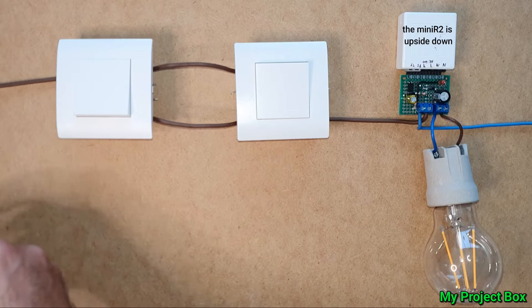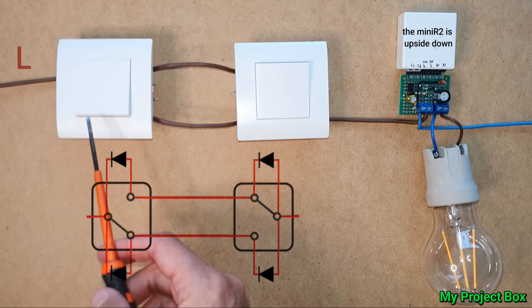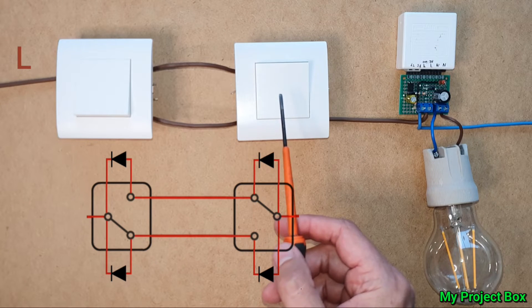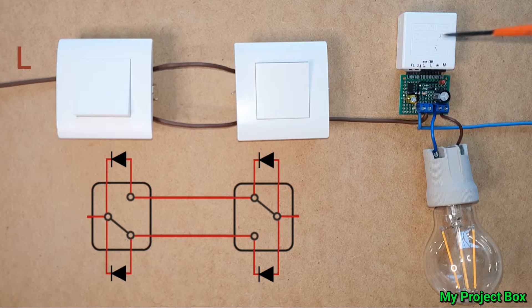So we have here the live coming in to our first two-way lighting switch which is a toggle switch and then you have two strappers going across and then you have your second two-way lighting switch and then that comes out goes to your light fixture.